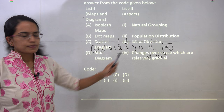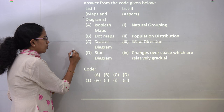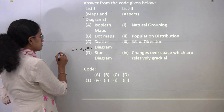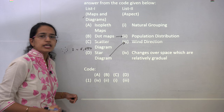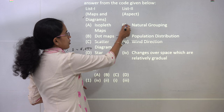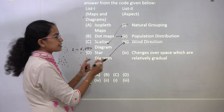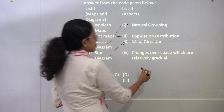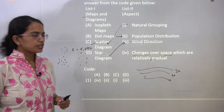You have to match diagrams with the aspects they cover. Dot maps are used to denote population — for example, one dot equals five thousand people, so ten dots represent fifty thousand. A star diagram shows wind directions and is used in wind roses. A scatter diagram talks about natural grouping — you plot scatter dots to show, say, where tiger population density is higher. Isopleth maps show a gradual change over space, depicting values like 10, 20, 30 slowly shifting across an area.